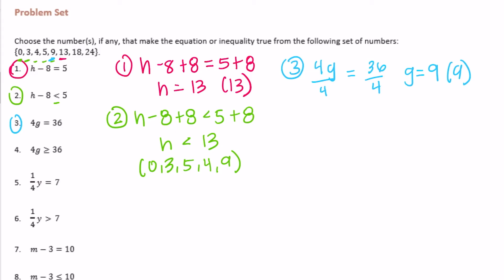Number 4: 4g divided by 4 this time is greater than or equal to 36 divided by 4, so g is greater than or equal to 9. Now we're looking for anything greater than or equal to 9, which would be 9, 13, 18, and 21. Those are the choices that would make that one true.